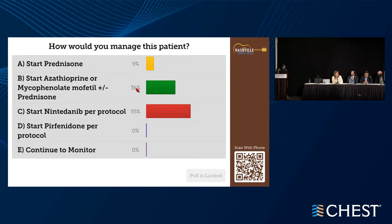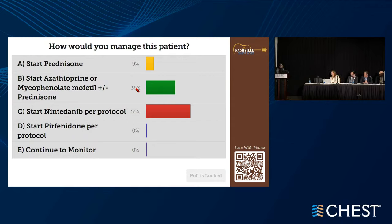What would your approach be to treatment? He had shown progression. I think it's appropriate to use nintedanib. But of course the first thing is to remove the antigen — that goes without saying. You could also consider immunosuppression depending on how he does once the antigen is removed. When you see a patient with HP, after removing the antigen, when do you consider corticosteroids or immunosuppression versus antifibrotic therapy?